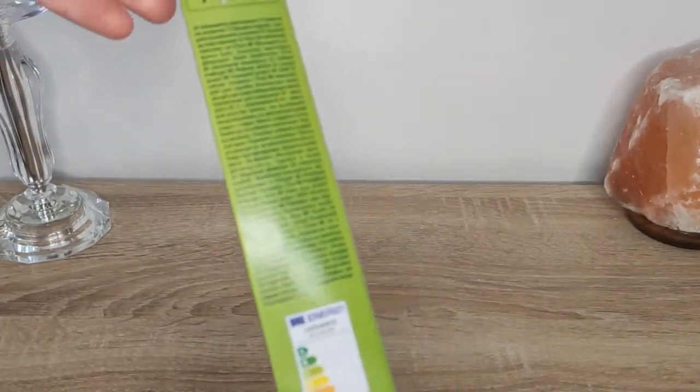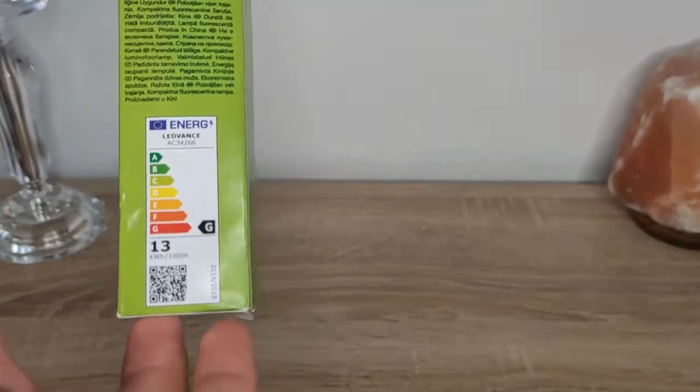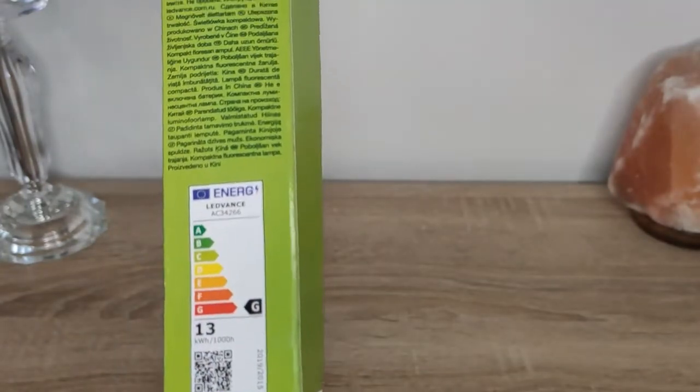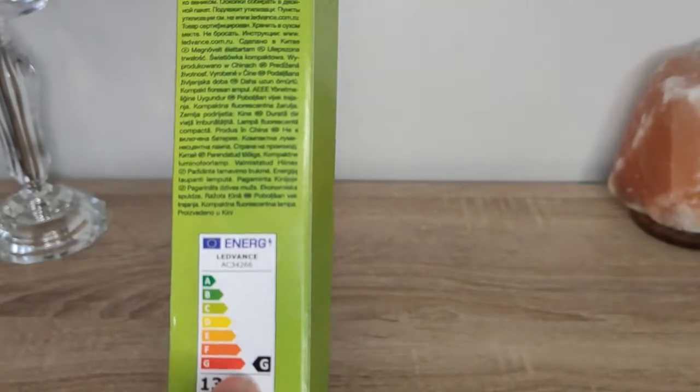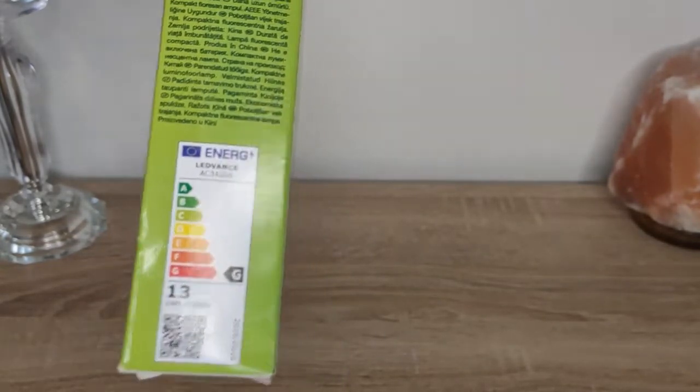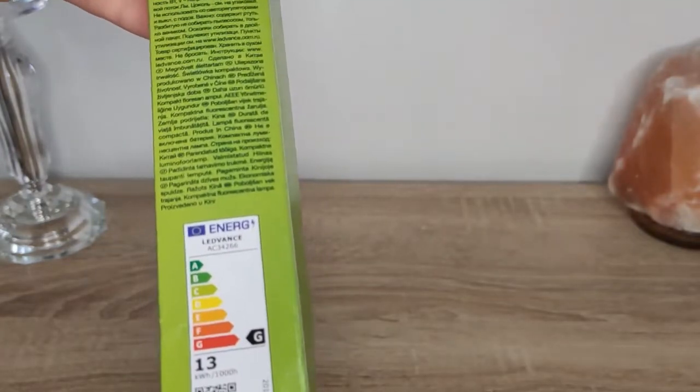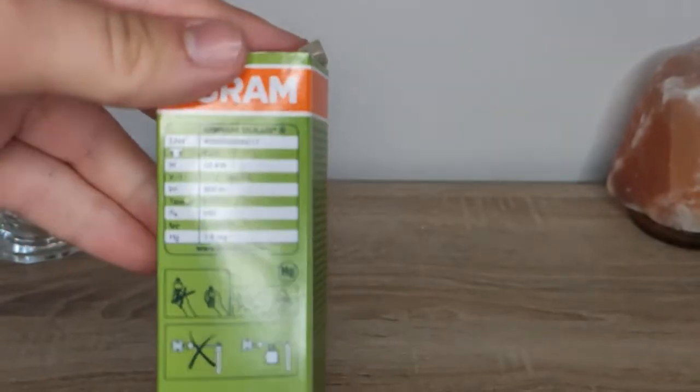First, though, let's see the box, because it is informative. I'm going to start with this energy efficiency class for Europe. It's G, but this is after the new standard, so this means that this is A. This is pretty much where a lot of energy saving lamps are in this range, and I'm going to now focus here.